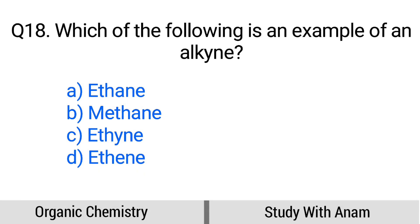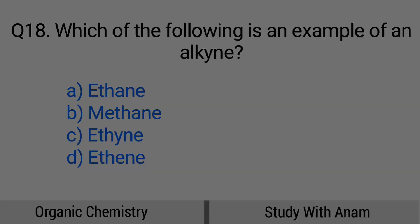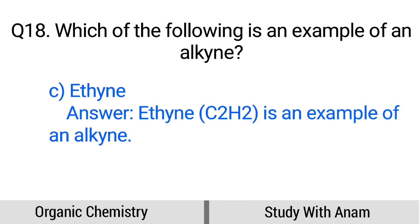Question number 18. Which of the following is an example of an alkyne? Option A: Ethane, B: Methane, C: Ethyne, D: Ethyne. The correct option is option C, Ethyne. Ethyne (C2H2) is an example of an alkyne.